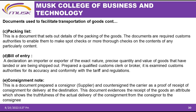The packing list helps customs identify the contents of tightly sealed packages. The bill of entry is a declaration by an importer or exporter of the exact nature, precise quantity, and value of goods that are landed or being shipped out. The consignment note is a document prepared by the consigner — also known as the supplier — and countersigned by the carrier as approval of receipt of the consignment for delivery at its destination. It evidences the receipt of goods and confirms the actual delivery.